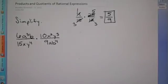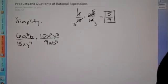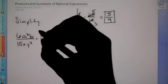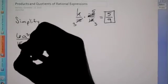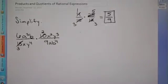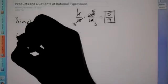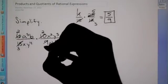We're going to be doing the same thing, except now we're going to have variables involved. What we can do is start off — if you look diagonally here, I like to always deal with my coefficients first. I have 10 and 15; those are both divisible by 5. So the 10 becomes a 2 and 15 divided by 5 is 3. Now I have also 6 and 9; those are divisible by 3, so 6 divided by 3 is 2.